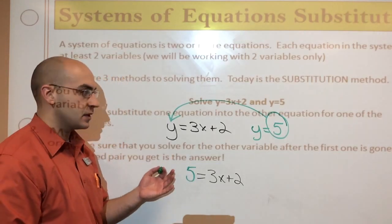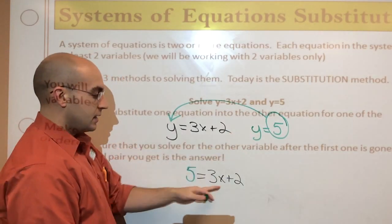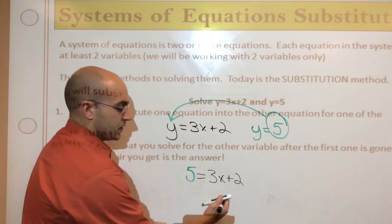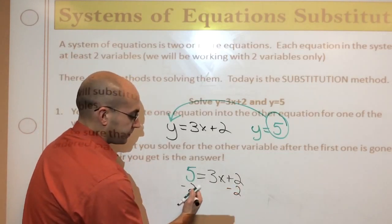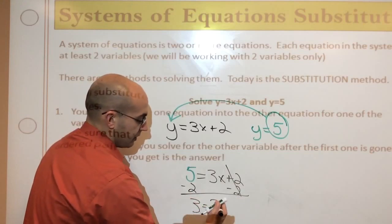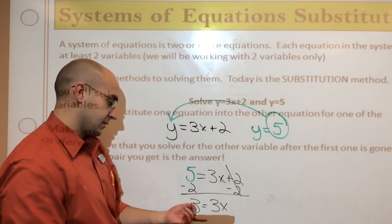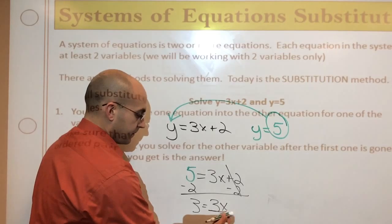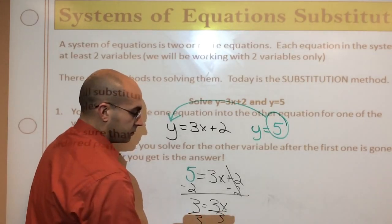So, now the y is gone, right, because we already kind of know what y is anyway. Now, I'm going to solve this equation for x. Now, I've got to subtract 2 on both sides, right, eliminate, draw a line, I'm left with 3 equals 3x. Now, x is going to be 1 because I'm dividing by 3 on both sides. So, x equals 1.